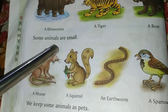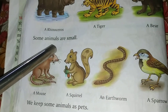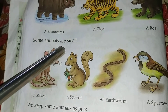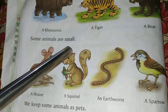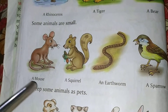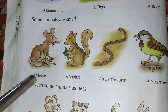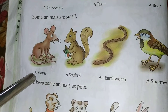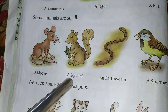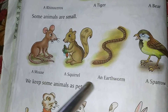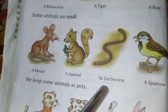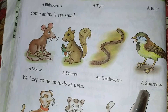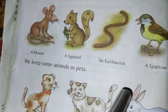Some animals are small. Here are some examples: a mouse, a squirrel, an earthworm and a sparrow.